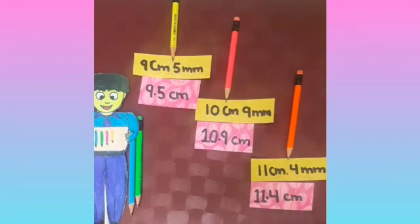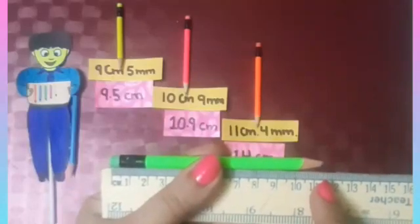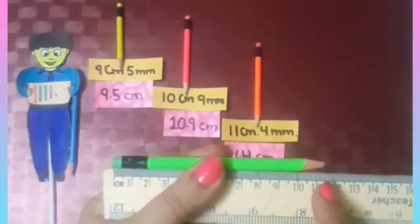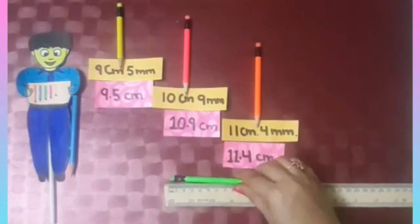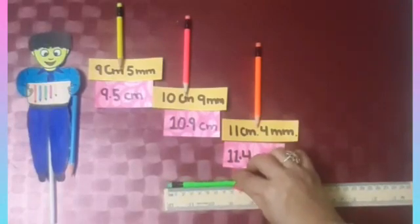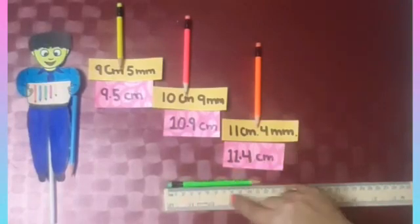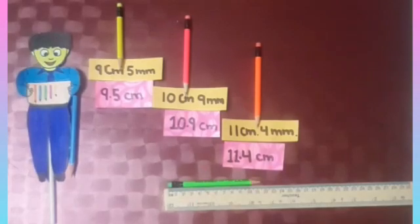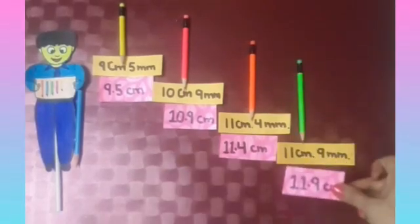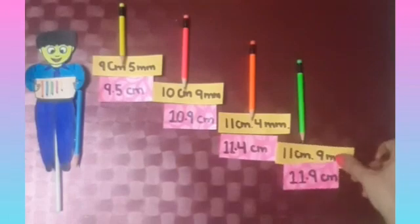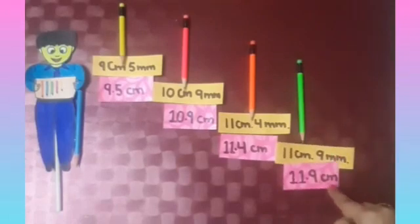Now we will measure the length of the fourth pencil. Look at the scale. Yes, its length is 11 cm and 9 mm. Put the pencil down to measure its length. Yes, its length is 11 cm and 9 mm, which is 11.9 cm.